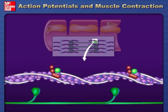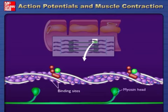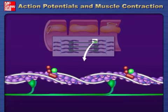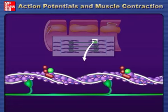When the tropomyosin moves, this uncovers the myosin binding sites on the actin, allowing myosin heads to bind and form crossbridges. The crossbridges play a role in muscle contraction.